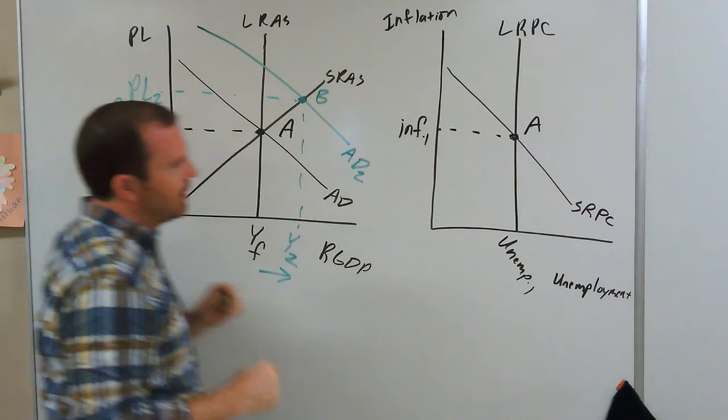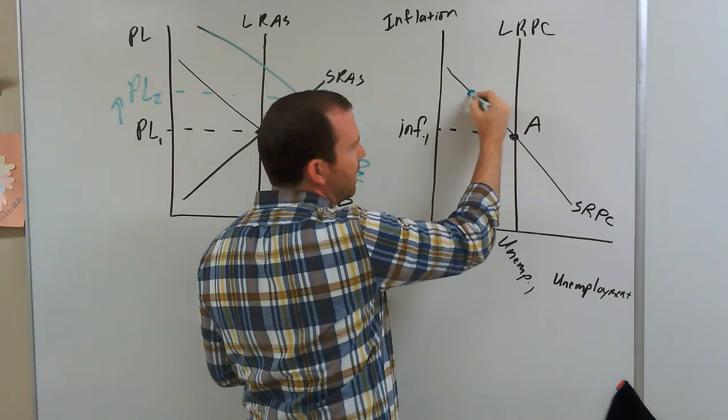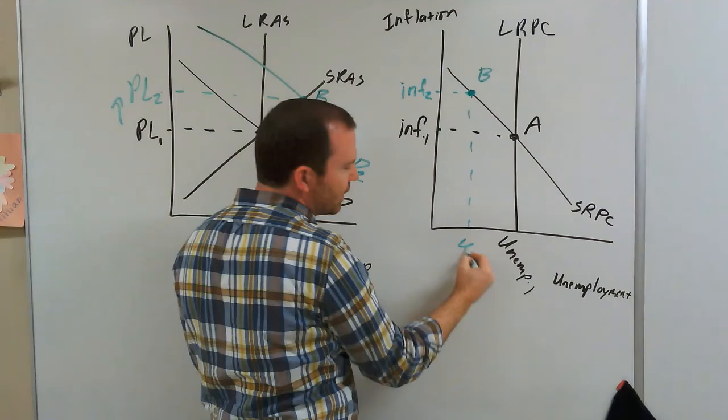So how does that look on the Phillips curve graph? The value on the y-axis — inflation — has gone up, and the value on the x-axis — unemployment — has gone down. So we're moving to a new point along the short-run Phillips curve, because changes in aggregate demand move us along the short-run Phillips curve. We're now at inflation rate 2 and unemployment rate 2 — unemployment has gone down, inflation has gone up.